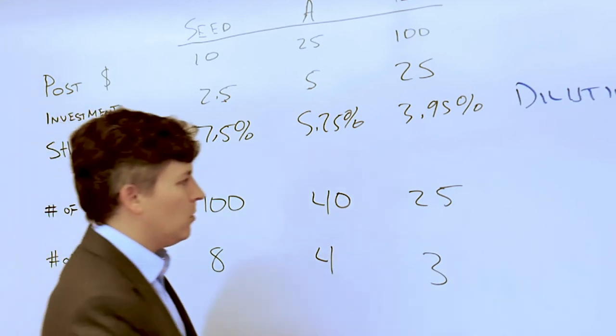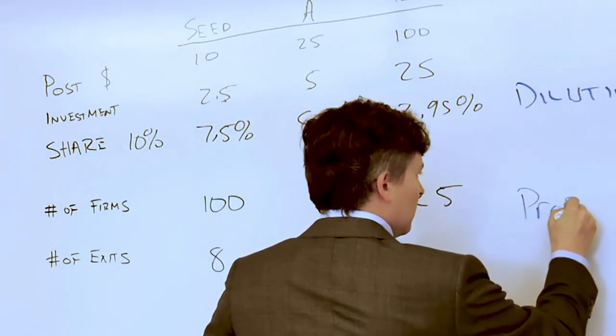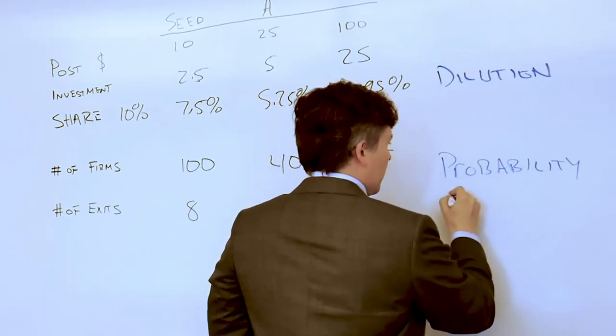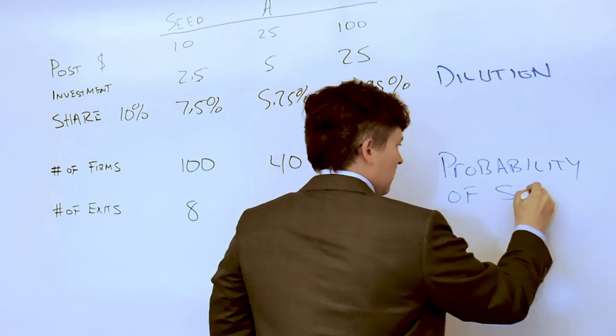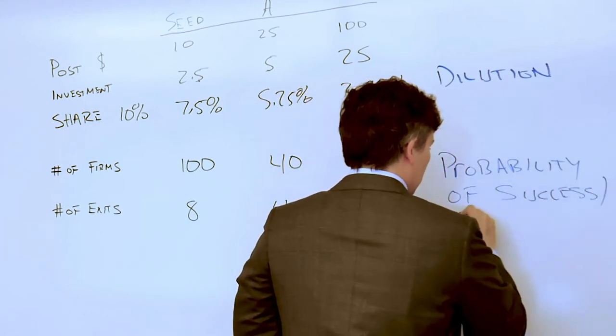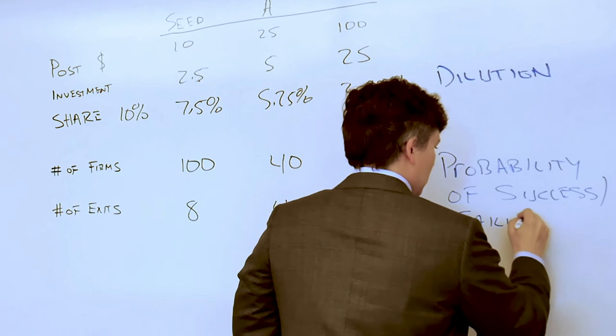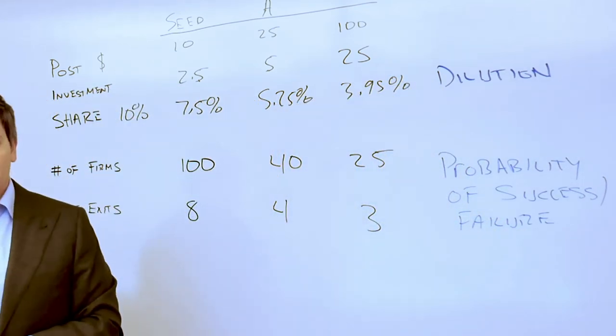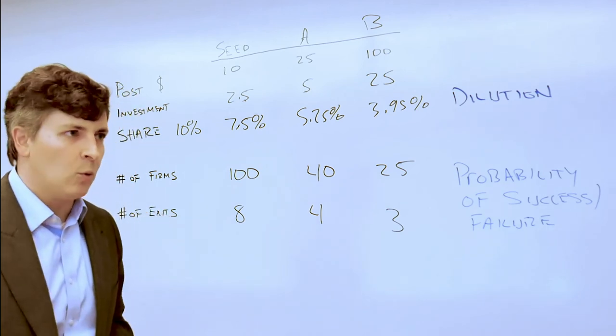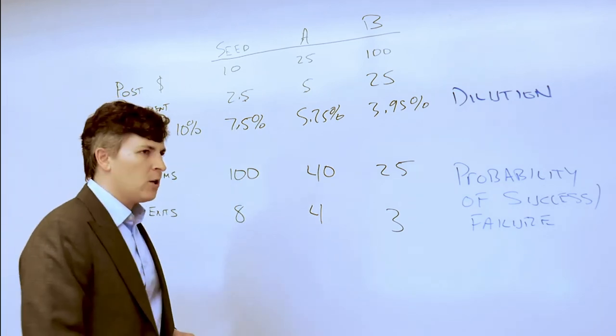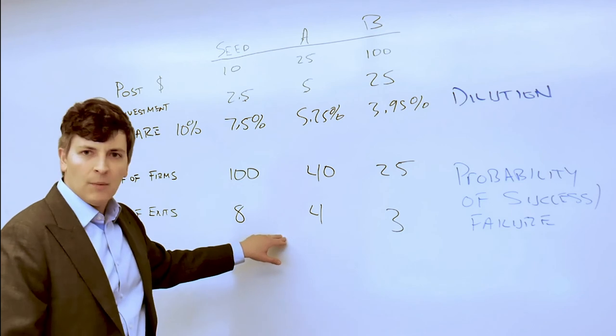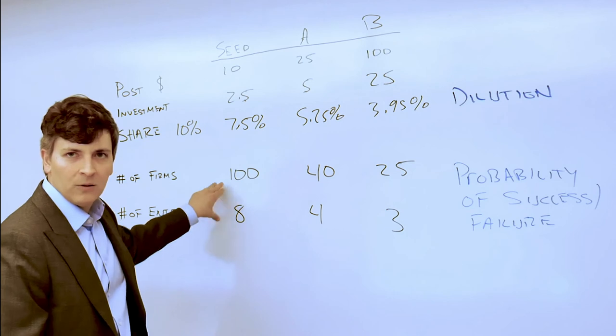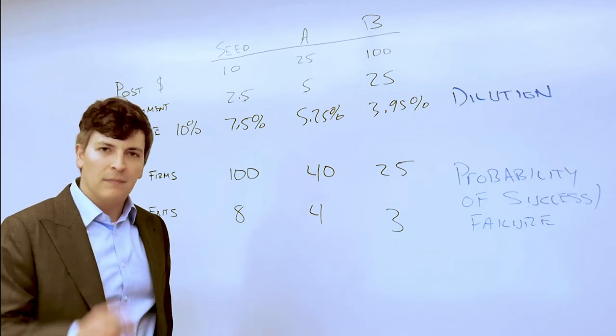What this shows you is the probability of success or failure in the data. We can't tell you what the probability of success or failure is for your individual firm or your individual situation, but on average about 70% of the firms that we start off with in the seed round are going to exit at zero.